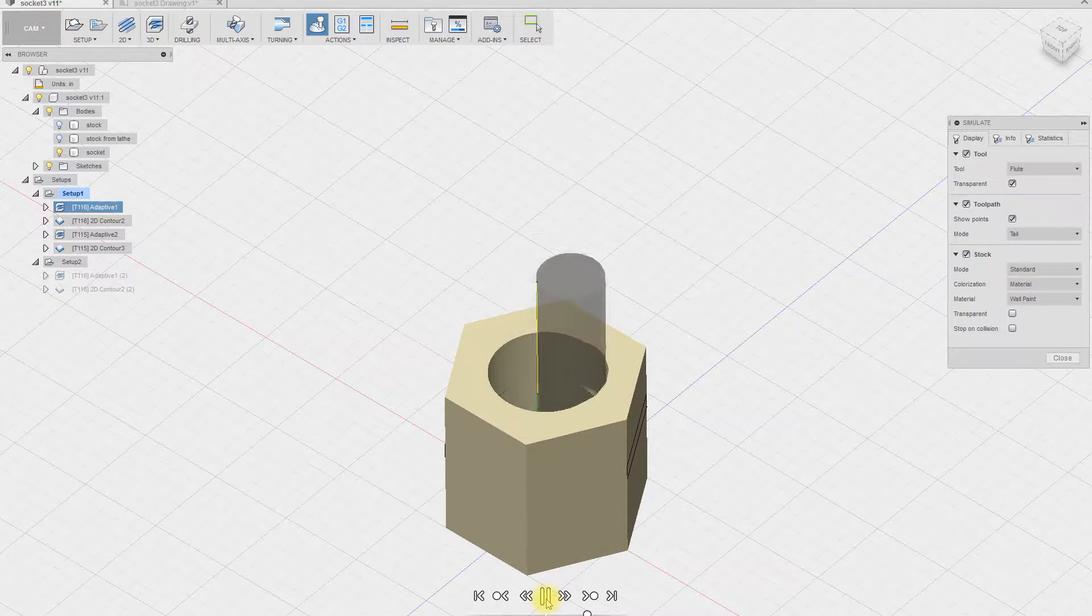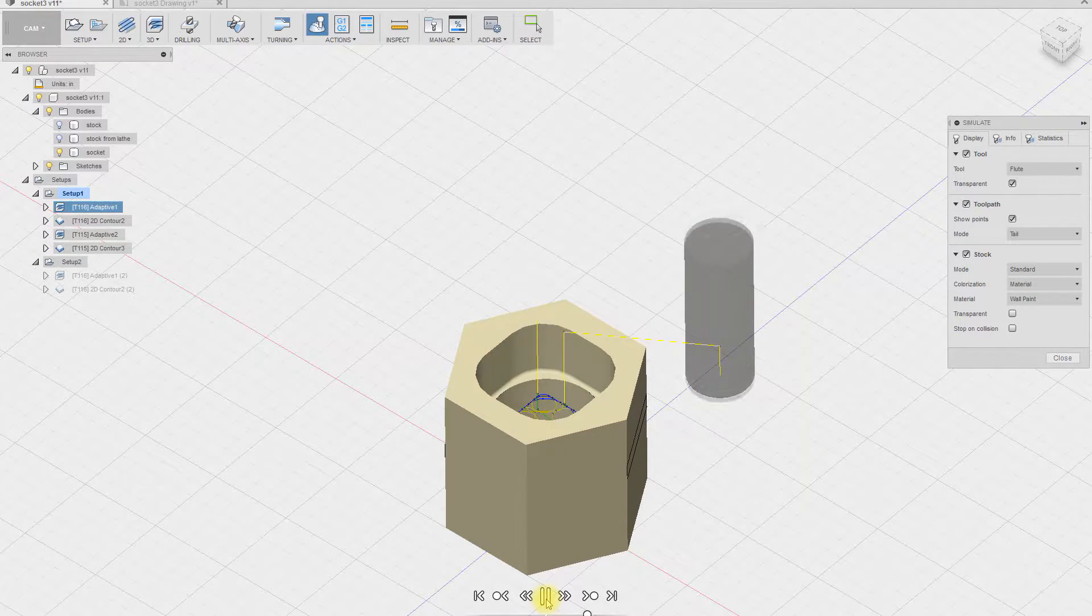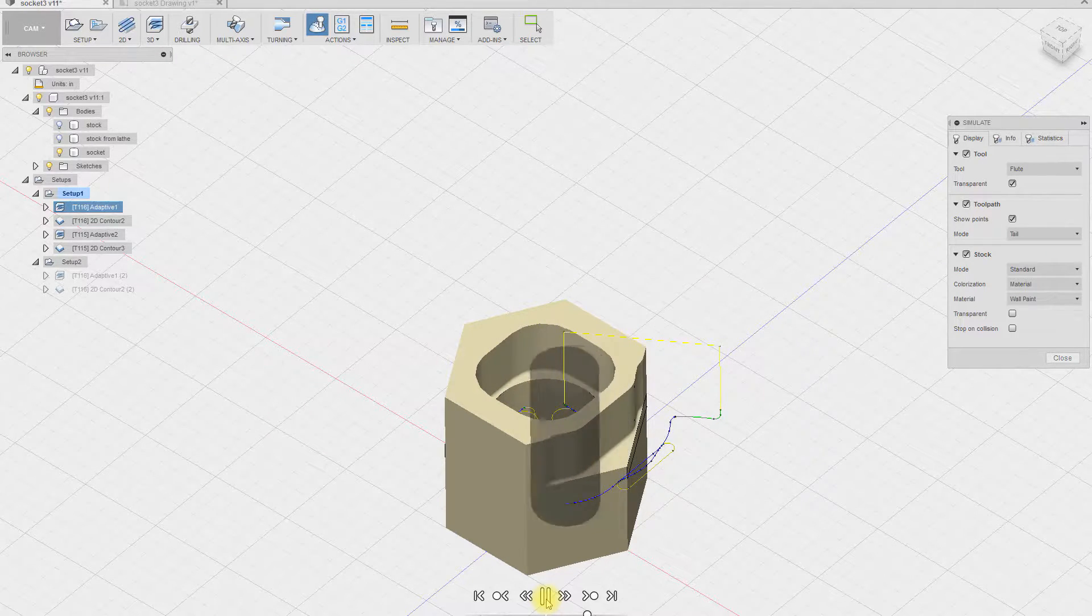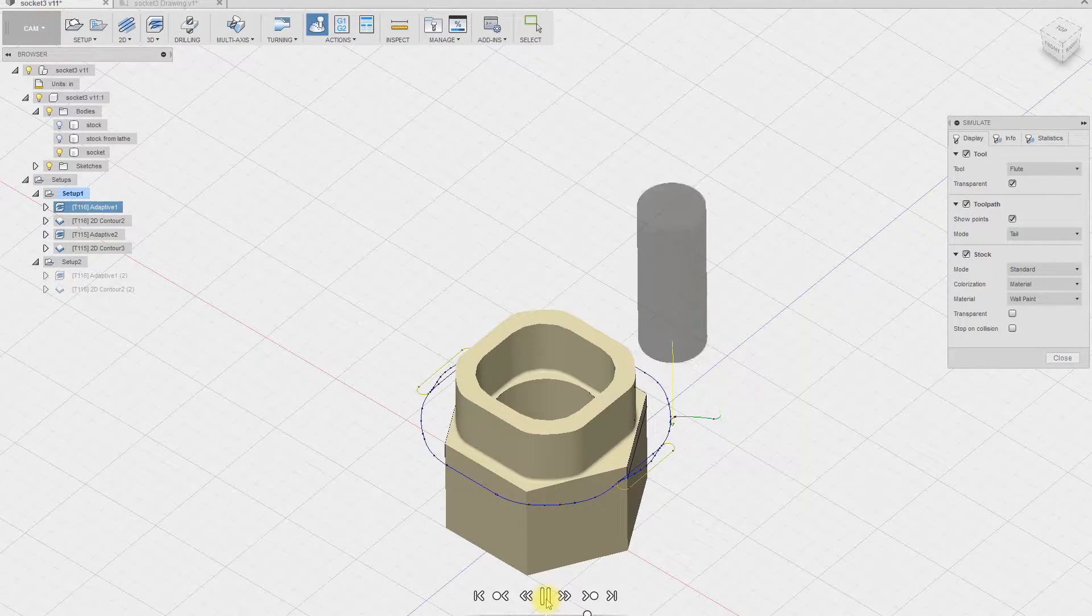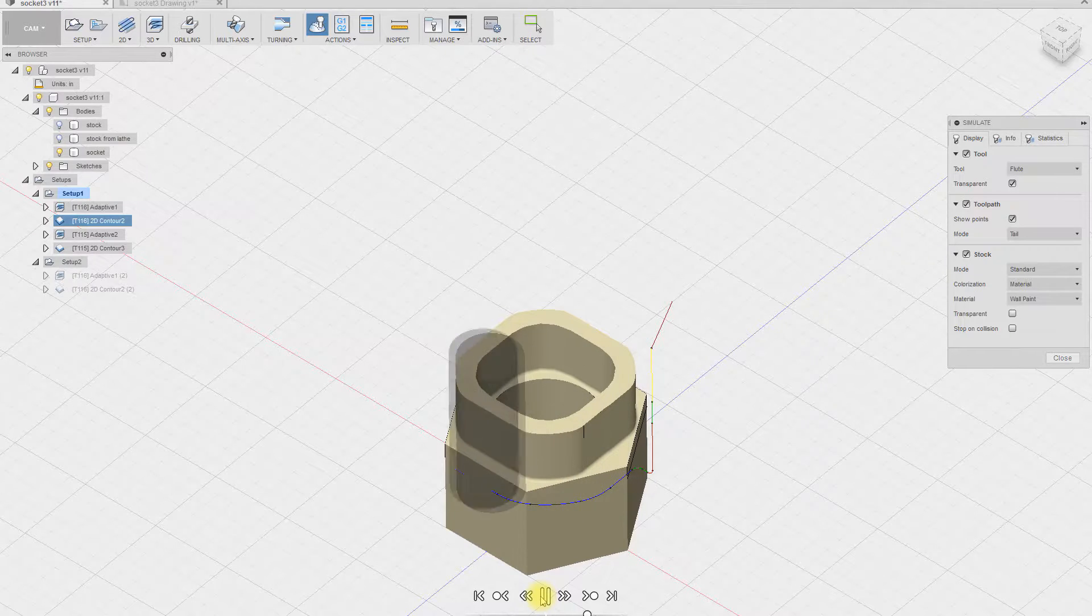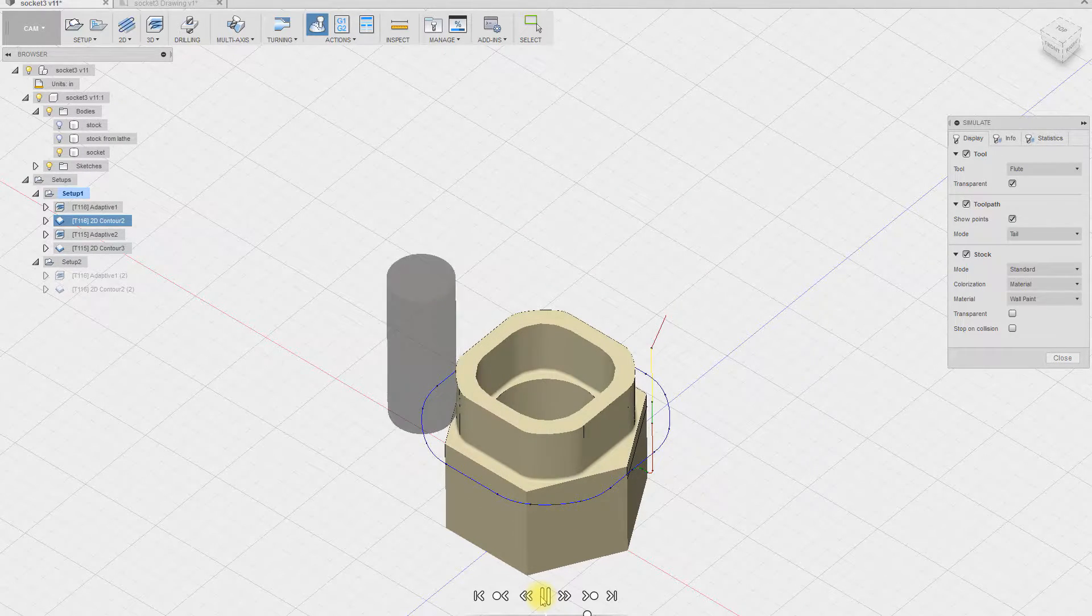A 3/8 four flute end mill lowers down the hole previously made on the lathe and clears a receiving hole for the retaining nut. The outside material is also cleared to create clearance with the support block. 2D contouring is used as a finishing operation. Two passes are made to compensate for tool spring back.